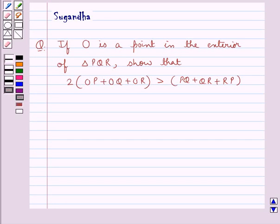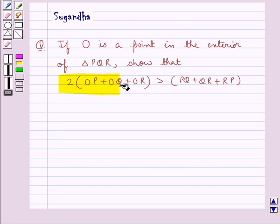Hello and welcome to the session. In this session we discuss the following question: if O is the point in the exterior of triangle PQR, show that 2 times OP plus OQ plus OR is greater than PQ plus QR plus RP.